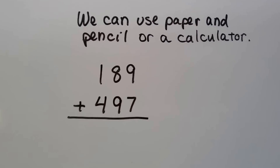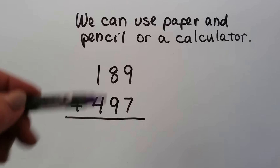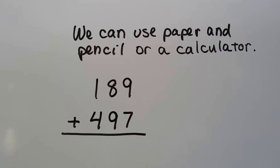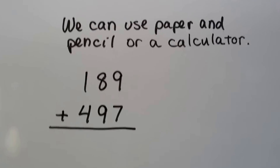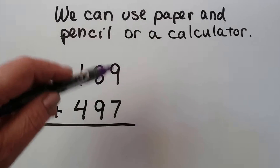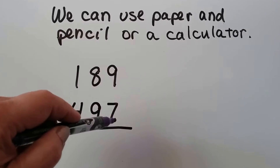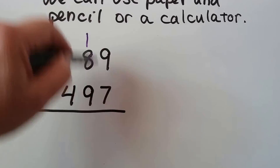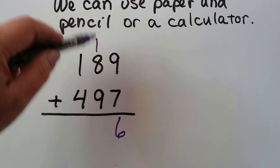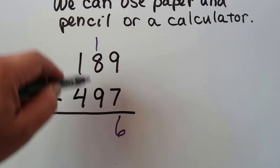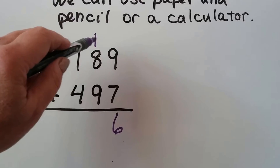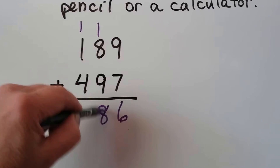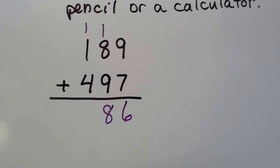We can use paper and pencil or a calculator for a harder problem. This one would be a little hard to do in our head. Using pencil and paper, we add the ones first - nine plus seven is 16, regroup the one and put the six down. Then in the tens place, the nine and one make a compatible number of 10, plus eight makes 18. Regroup, put the one up and the eight down, then just add the hundreds.